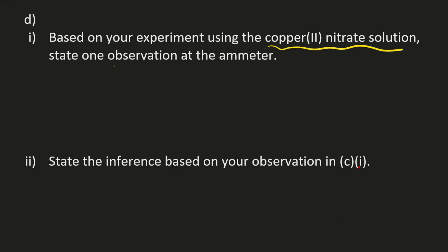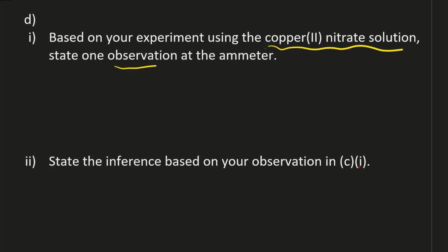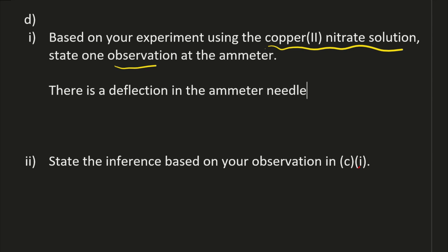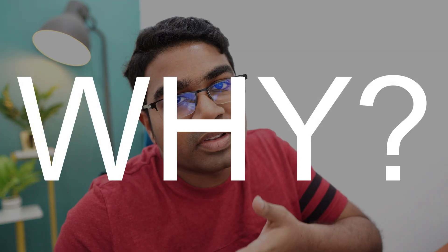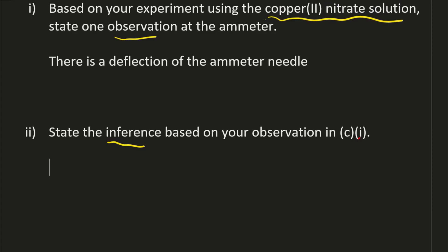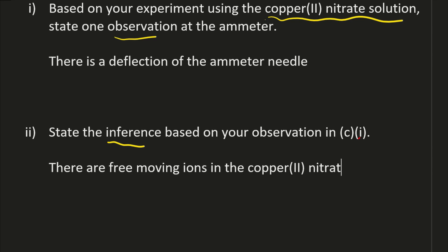This hypothesis is based on your experiment using copper 2 nitrate solution. State one observation: whenever it involves an ammeter, voltmeter, or galvanometer, the observation must include deflection of the needle. For the copper 2 nitrate solution — the ionic compound in aqueous solution — there is a deflection in the ammeter. The inference, which is the 'why' of the observation, is that there are free moving ions in the copper 2 nitrate solution which enables it to conduct electricity.